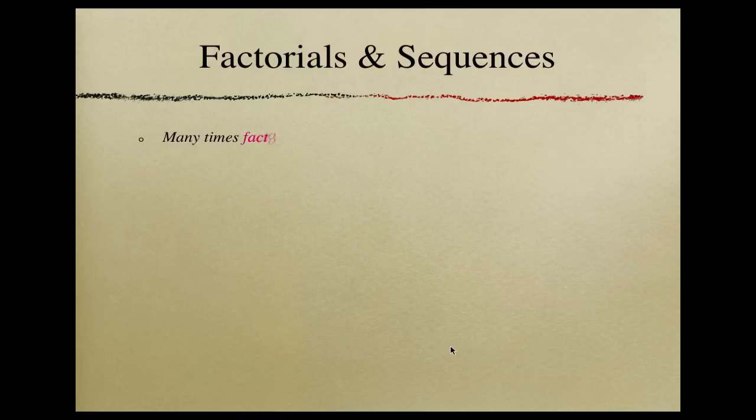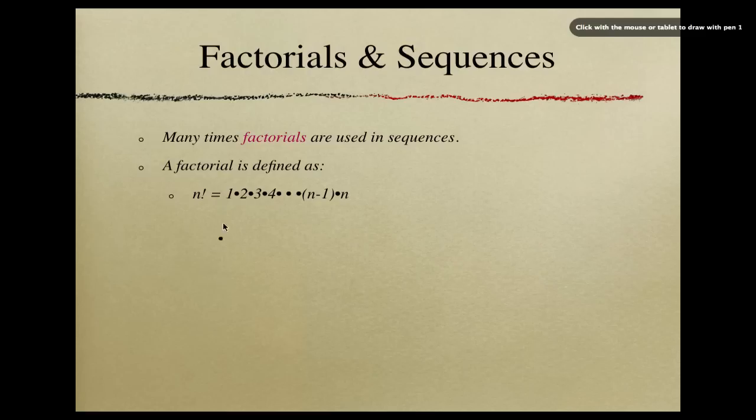So factorials. You may be familiar with factorials. They are used a lot in sequences. First of all, it's represented by this exclamation point. When you see the exclamation point right there, that means that you have a factorial. And a factorial is just the consecutive integers leading up to whatever term, this is your term right here, multiplied together. So you'd have 1 times 2 times 3 times 4, all the way up to times n, if you have n factorial.